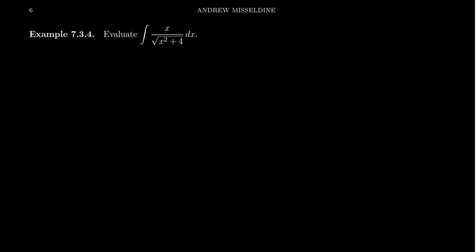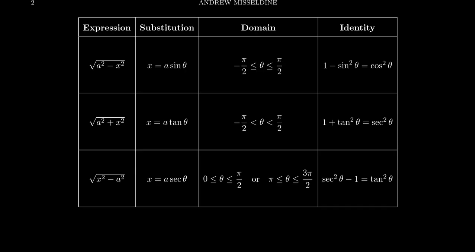Now, in this example, you can see that this square root of x squared plus 4, that being in the denominator, really indicates to me that we could use a trigonometric substitution to help us out here. Because after all,